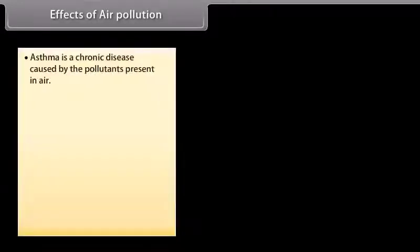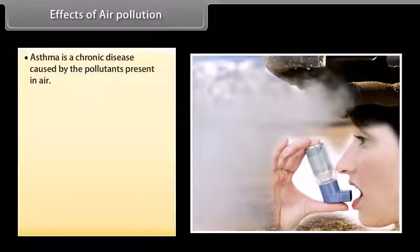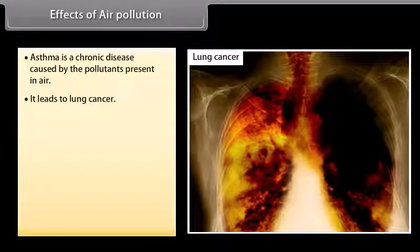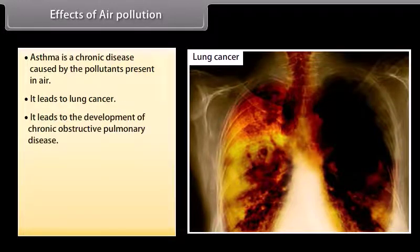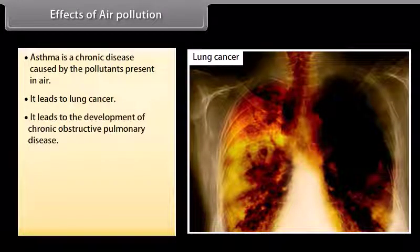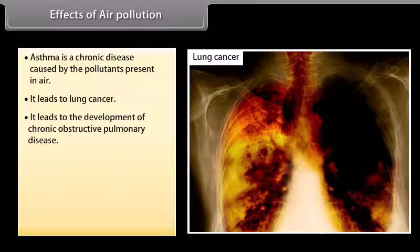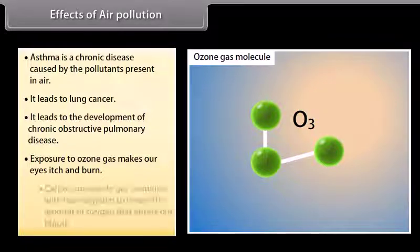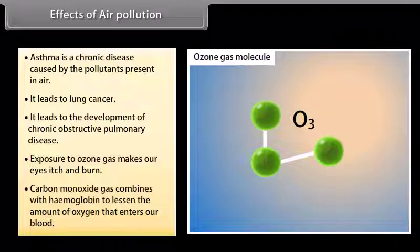Effects of air pollution. Asthma is a chronic disease caused by pollutants present in the air. It leads to lung cancer and the development of chronic obstructive pulmonary diseases. Exposure to ozone gas makes our eyes itch and burn. Carbon monoxide gas combines with hemoglobin to lessen the amount of oxygen that enters our blood.